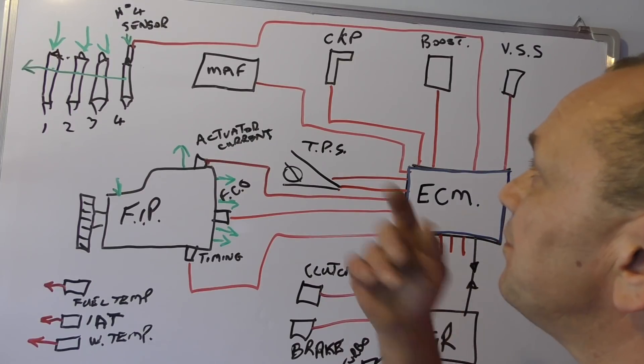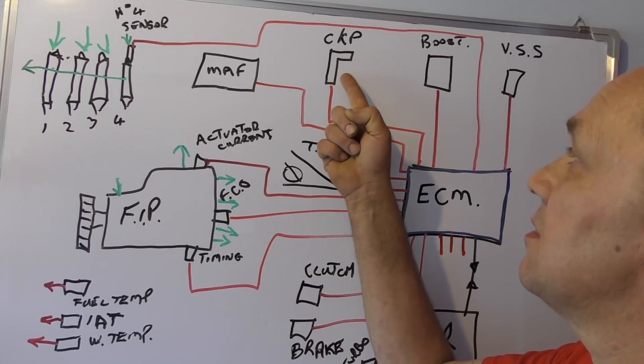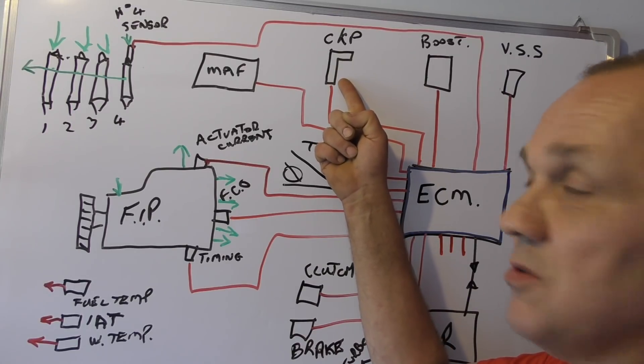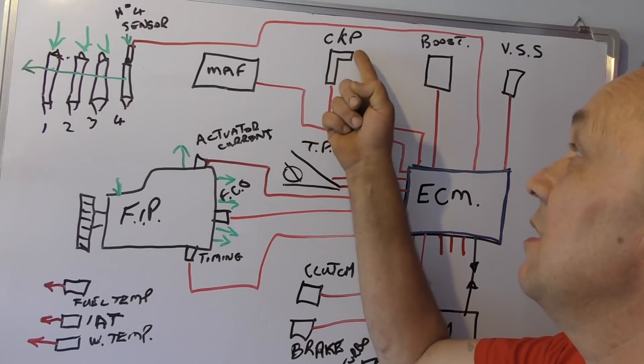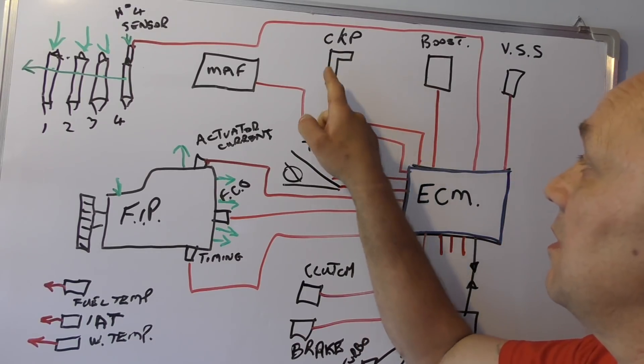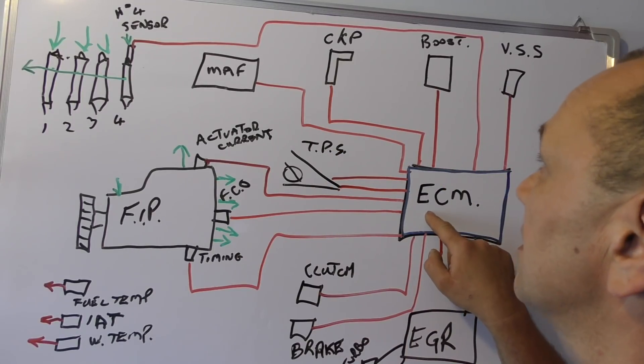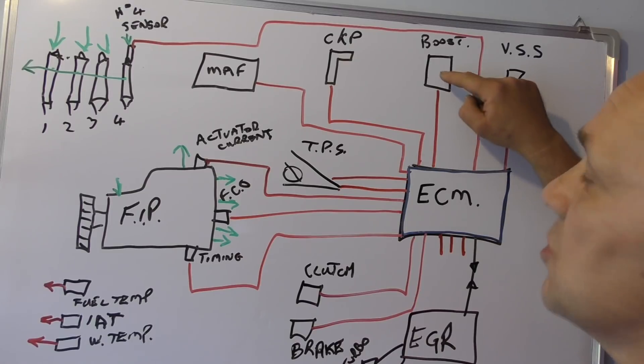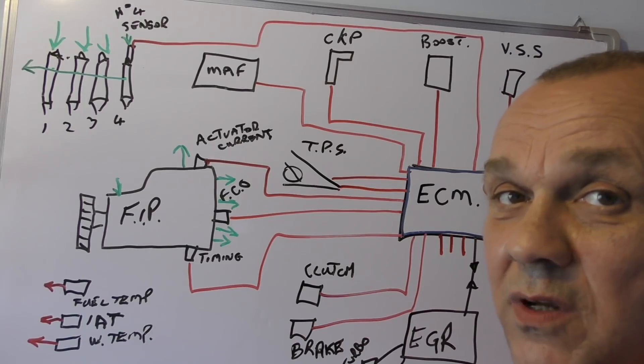It needs to know what position the engine is in and how fast it's going, how fast it's rotating. You do this with a crank position sensor, okay? Or CPK or CKP or whatever it's called. Information again goes to the ECU or the ECM, okay? Boost control. ECM. Vehicle speed sensor as well.